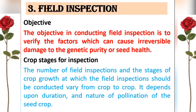The number of field inspections varies from crop to crop. For self-pollinated crops, the number of field inspections is less compared to cross-pollinated crops. Similarly, for variety seed production, inspections are fewer than for hybrids — hybrids require a minimum of three to four field inspections because much more care is needed.